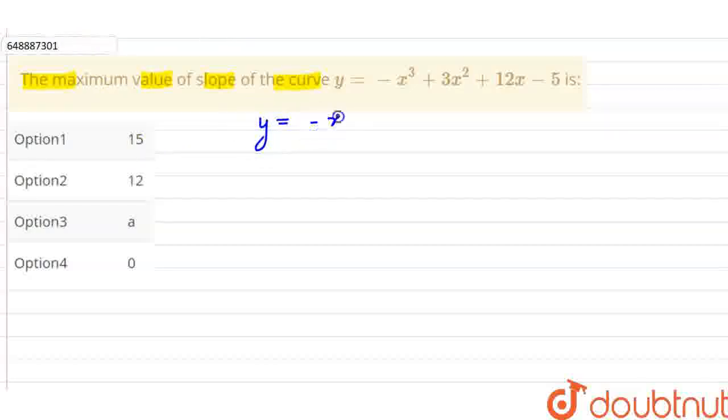So y is minus x cube plus 3x square plus 12x minus 5. So the slope of the curve is dy by dx. Slope of the curve is dy by dx. So we will differentiate. So minus 3x square plus 6x plus 12. This is the slope of the curve.